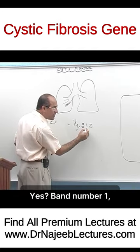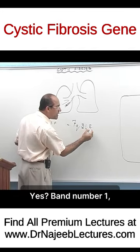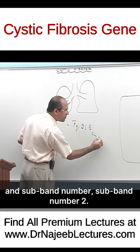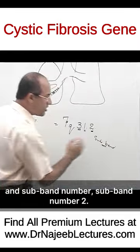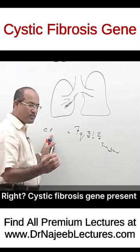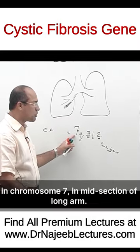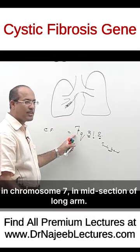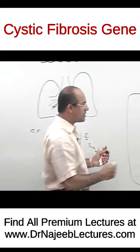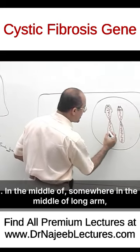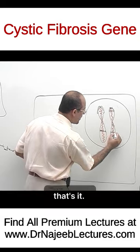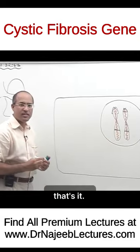Yes, band number 1, and sub-band number 2. So that cystic fibrosis gene is present on chromosome number 7, in the mid-section of the long arm — somewhere in the middle of the long arm. That's it.